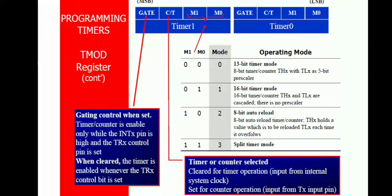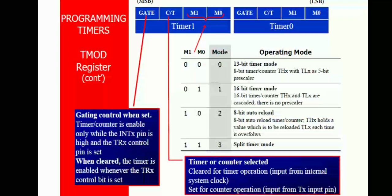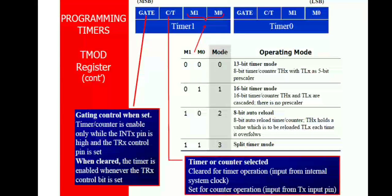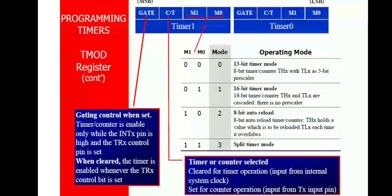There are four mode operations: Mode 0, Mode 1, Mode 2, and Mode 3. Mode 0 is a 13-bit mode timer operation. Mode 1 is a 16-bit mode timer operation. Mode 2 is an auto-reload 8-bit timer mode operation. And Mode 3 is a split timer mode operation. In such a way, we can use the timer in different mode operations.